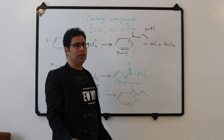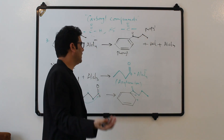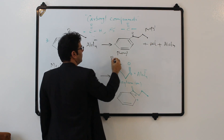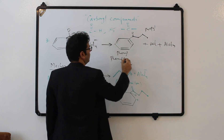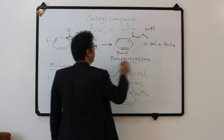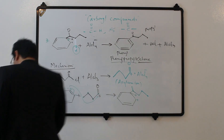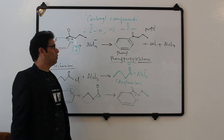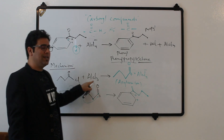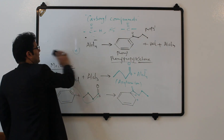Now how do we name this ketone? The first group starts with 'P' — phenyl. The second group is propyl. Alphabetically, phenyl and propyl: the first letter is 'P' for both, so we go to the second letter — 'H' comes before 'R', so phenyl comes first. The name is phenyl propyl ketone. This is an aromatic ketone. Now I want to give you some practice exercises you can do at home — we will only change the acid chloride, as the catalyst and benzene remain the same.